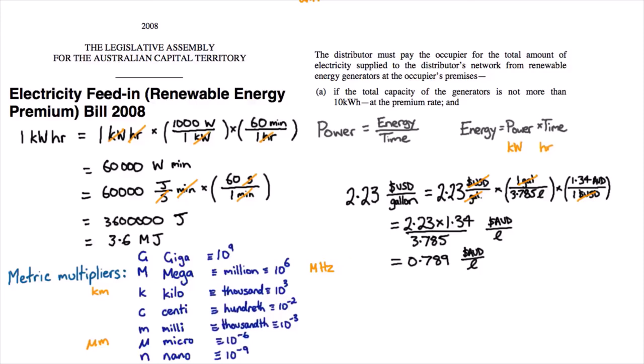So a megahertz is a million cycles per second, or in terms of computers you might have heard of gigahertz. You might have heard of centimeters, you might have heard of milliliters, you might have heard of nanometers.